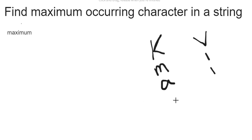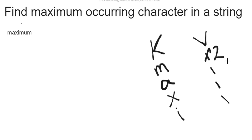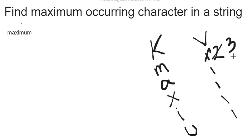Next, 'x' is not present in the HashMap, so 'x' is one. Next, 'i' is also not present, so it will be one. Next, 'm' is checked — 'm' is already present in the HashMap, so the previous value is increased by one, making it two. Next, 'u' is not present, so 'u' is added with occurrence one. Then the next 'm' is checked — it is present, so the value is increased from two to three.